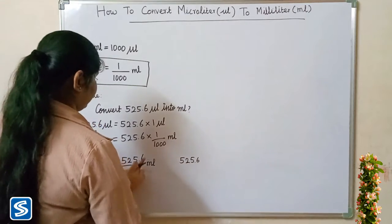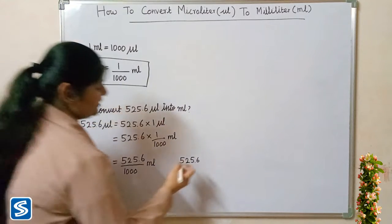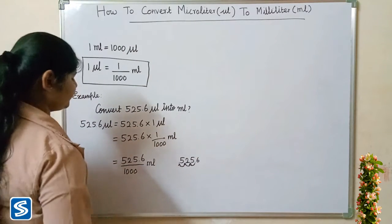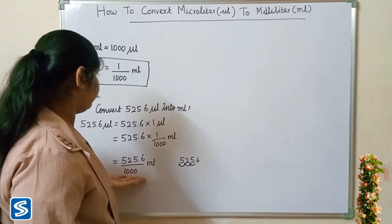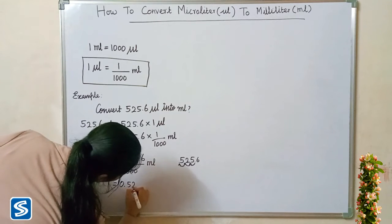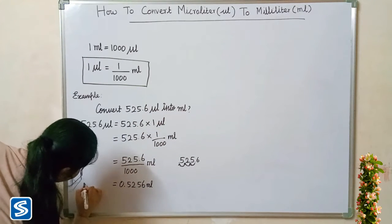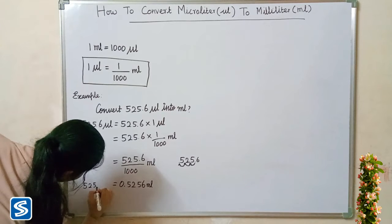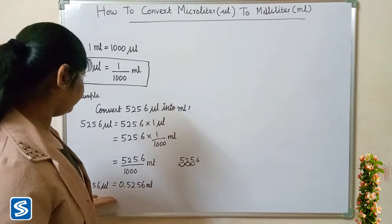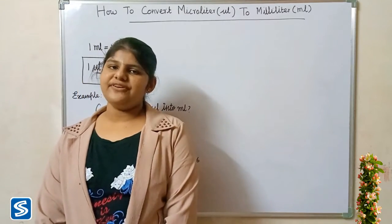The easy way to divide a decimal number by thousand is to move the decimal point three places to the left: one, two, three. So when we divide five hundred and twenty five point six by thousand millilitres, our answer will be 0.5256 millilitres. So 525.6 microlitres is equal to 0.5256 millilitres.